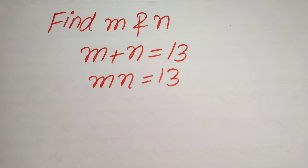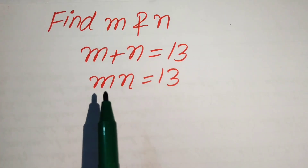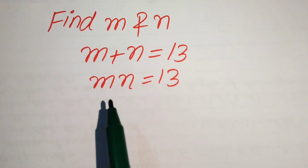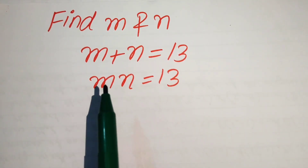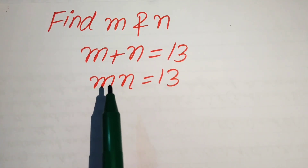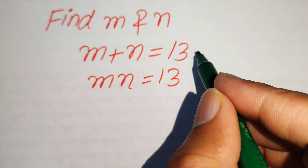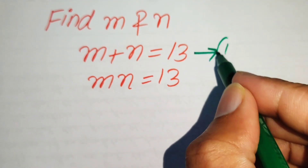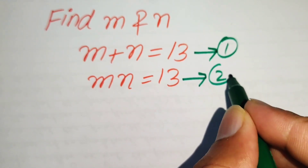Hello everyone, welcome. We will solve this Math Olympiad algebra problem. Here we have m plus n equals 13 and m times n equals 13. We need to find the values of m and n. We call the first equation number 1 and the second equation number 2.